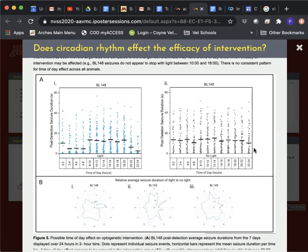When analyzing the relative average seizure duration, we found that animal 148 again showed this time-of-day effect in that region, while the other animals did not.